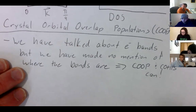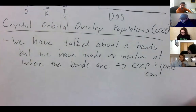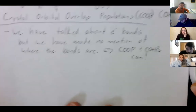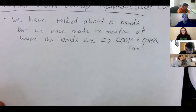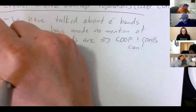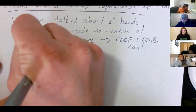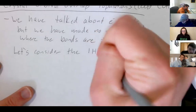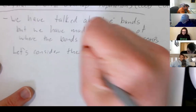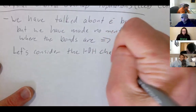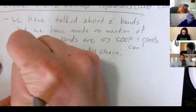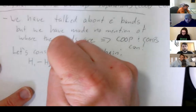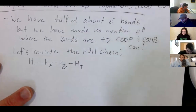COOPs and COHPs can tell us about bonding. Let's go back to the simplest system — the 1D hydrogen chain. We have hydrogens in a row: hydrogen 1, hydrogen 2, hydrogen 4. We're going to keep track of the interaction of H1 and H2, and also the interaction of H1 and H3.